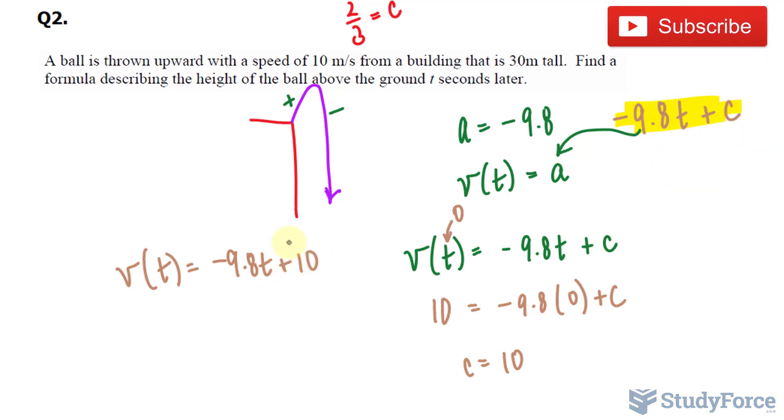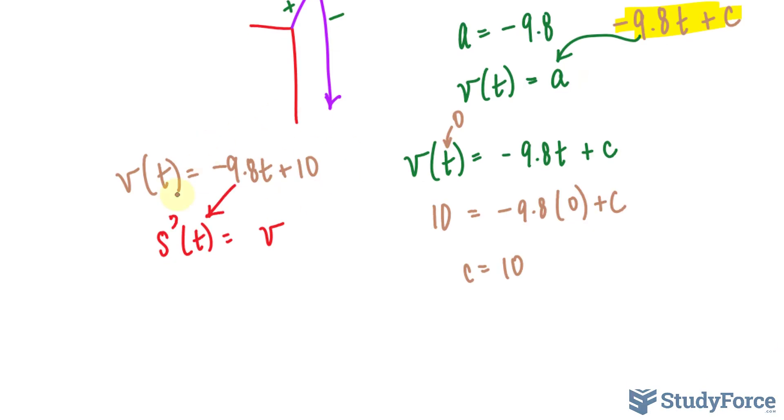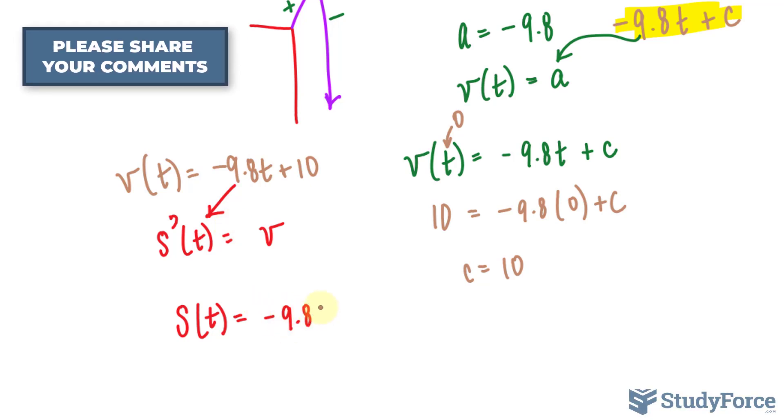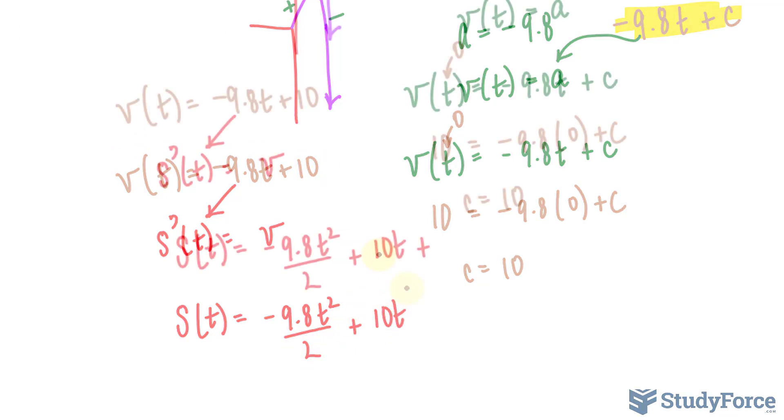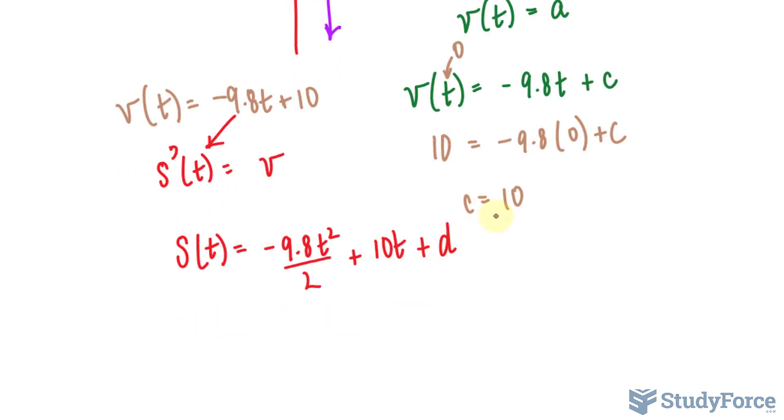Now that we've found this important function, we can actually start to find the function for the displacement of this ball. And we'll call that function s with respect to t. And it turns out that taking the derivative of this gives you the velocity. So the derivative of this function gives you the velocity. And by taking the antiderivative of this, we end up with the displacement function, s of t. Let's go ahead and find the antiderivative of that. We have s of t is equal to, the antiderivative of negative 9.8t is negative 9.8t to the power of 2 over 2. The antiderivative of 10 is 10t. We're not going to use c this time, we'll use d because c has already been used.